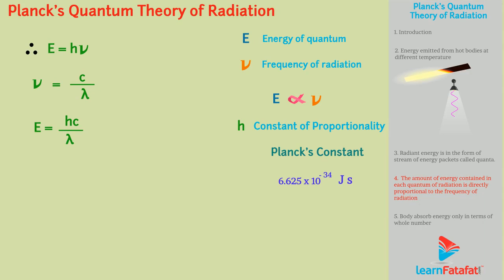Also, the body can emit or absorb energy only in terms of whole number multiple of a quantum. That is, E equals n h nu, where n equals 1, 2, 3, 4 and so on. So it means a body can emit or absorb energy as h nu, 2 h nu, 3 h nu and so on.